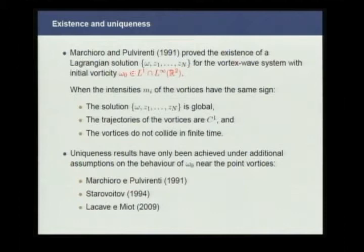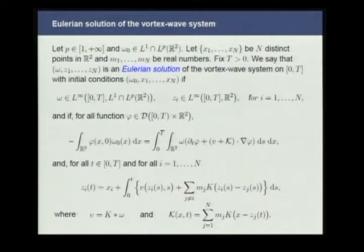Regarding uniqueness, there is no general result. You can only obtain uniqueness results when you make additional assumptions on the behavior of omega_0 near the point vortices. Results in this direction include Pulvirenti in 1991, Starovoitov in 1994, and the very interesting result from Lacave and Miot from 2009.